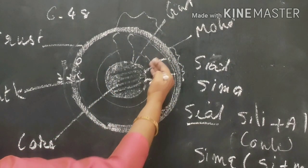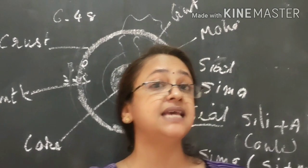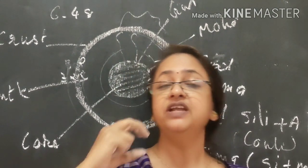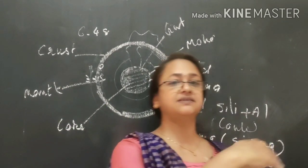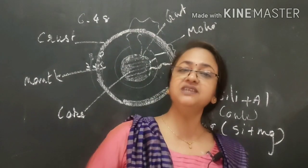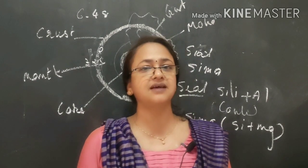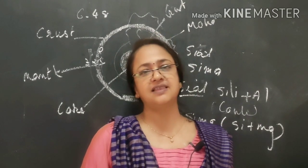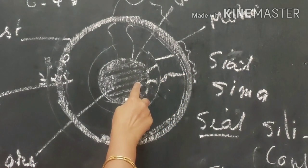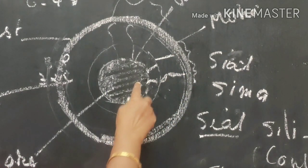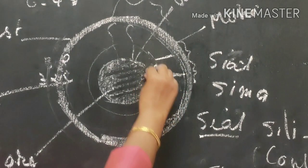A new term: the asthenosphere. As we go deeper, temperature increases and rock particles start melting into a somewhat liquid state — this is the asthenosphere. The upper mantle is the asthenosphere, which is in a liquid state. The lower part of the mantle, below the asthenosphere, is the mesosphere, which is solid.